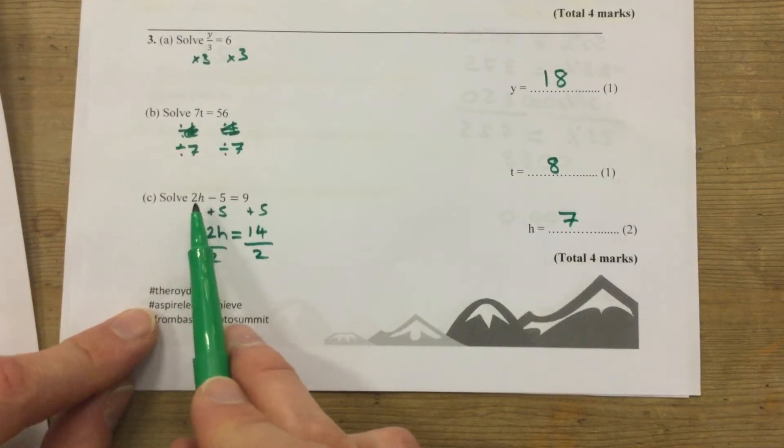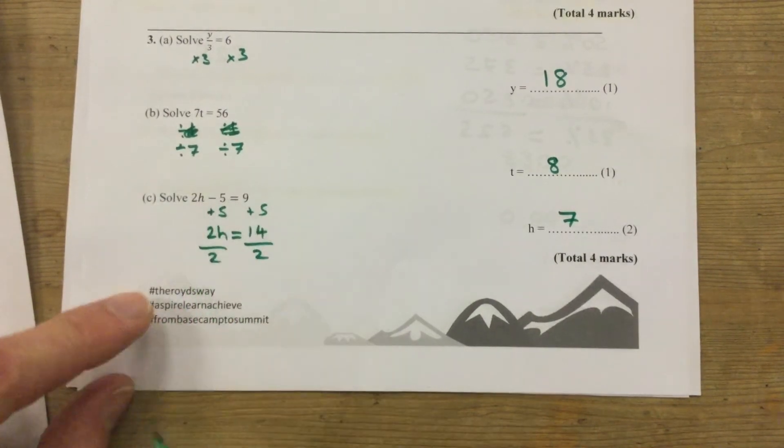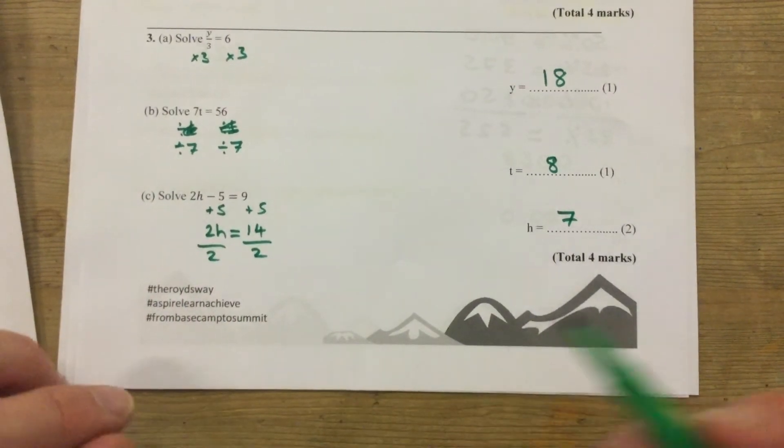Put the 7 back in: 2 times 7 is 14, take away 5 is 9. Perfect. We're happy.